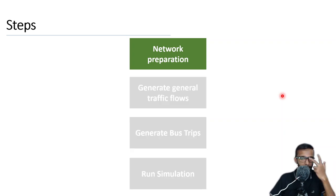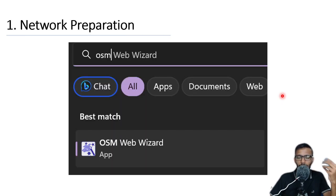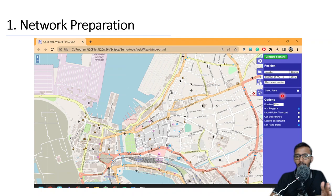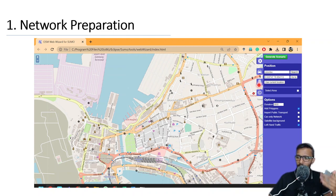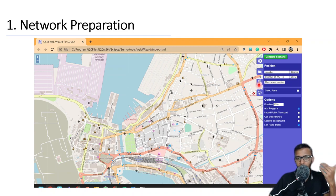Let's start with the network preparation part. Once you install SUMO, it includes a script or app called OSM Web Wizard. What OSM Web Wizard does is open a web browser with OpenStreetMap, where you can search for any location and display a particular area on the map. Using the select area checkbox, you can select the area you're interested in and download it. Before downloading, you can also remove or untick unnecessary road segments from the network.